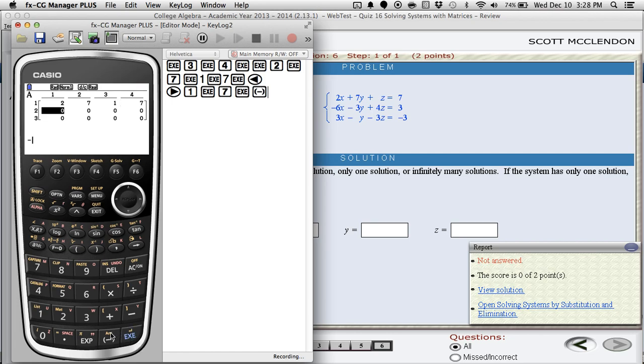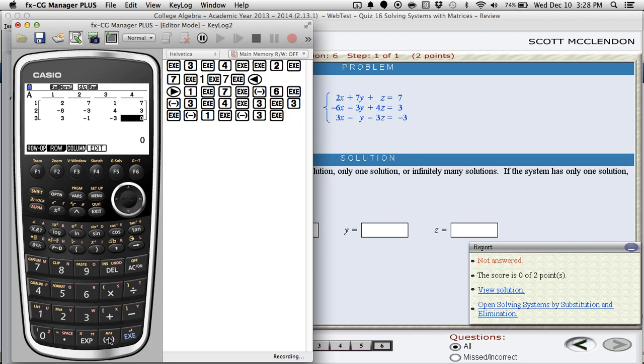And then negative six and a negative three, a four, a three, another three, negative one, negative three, and another negative three. Okay. So there's our matrix.